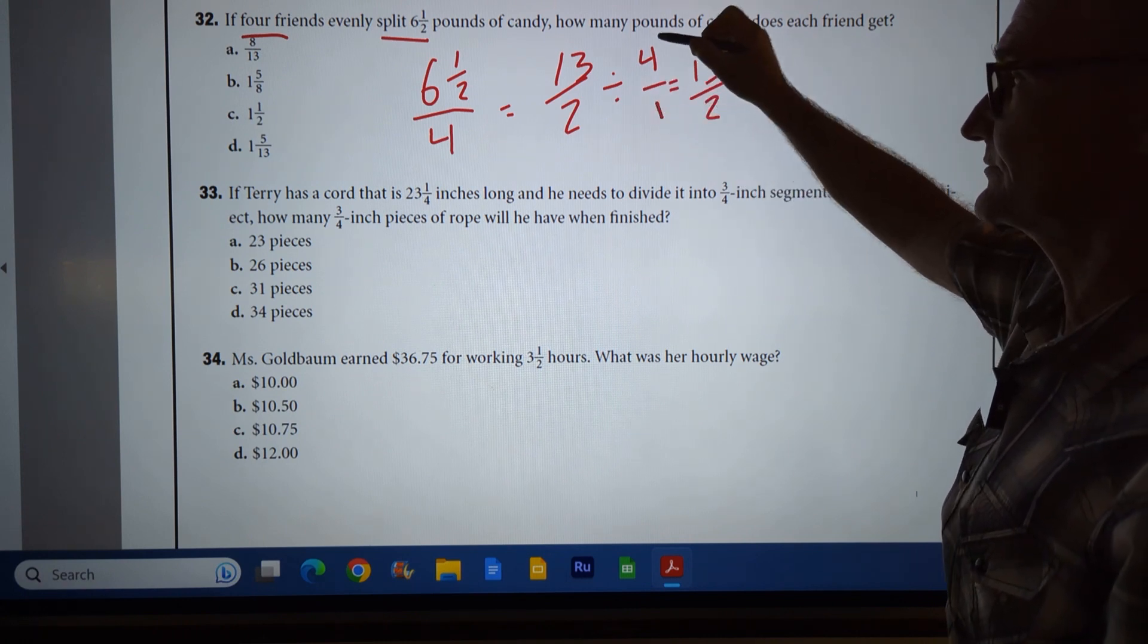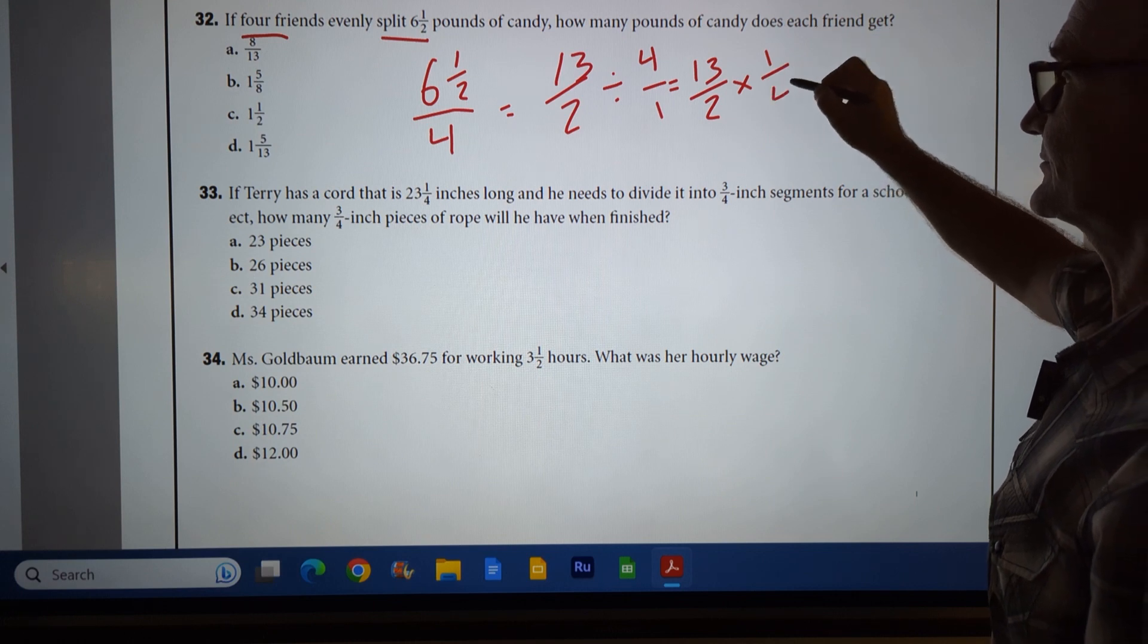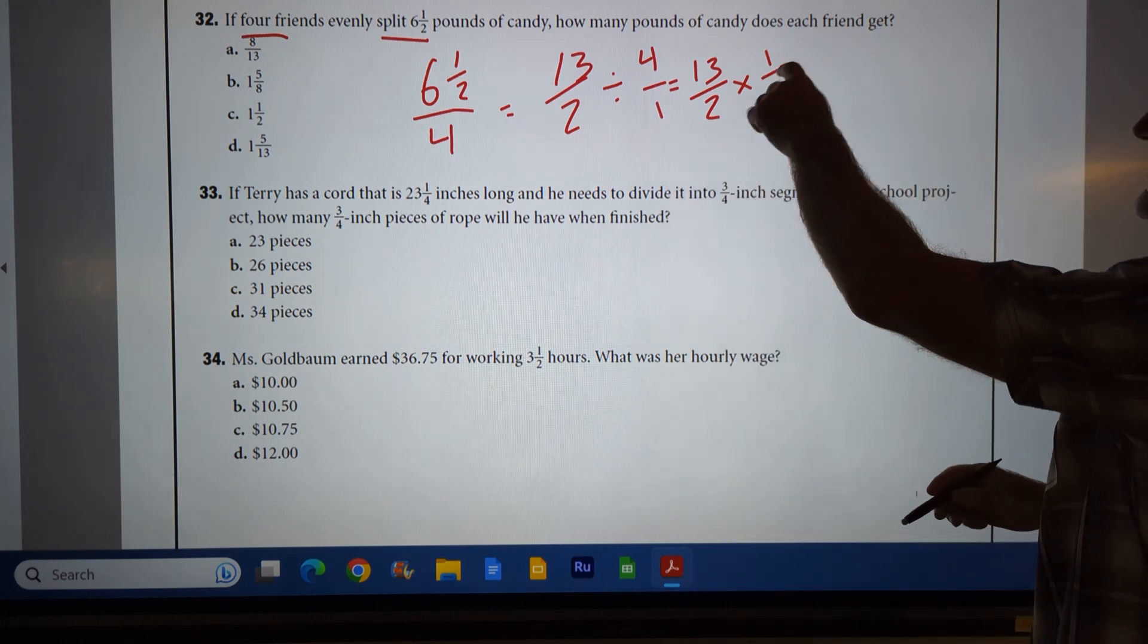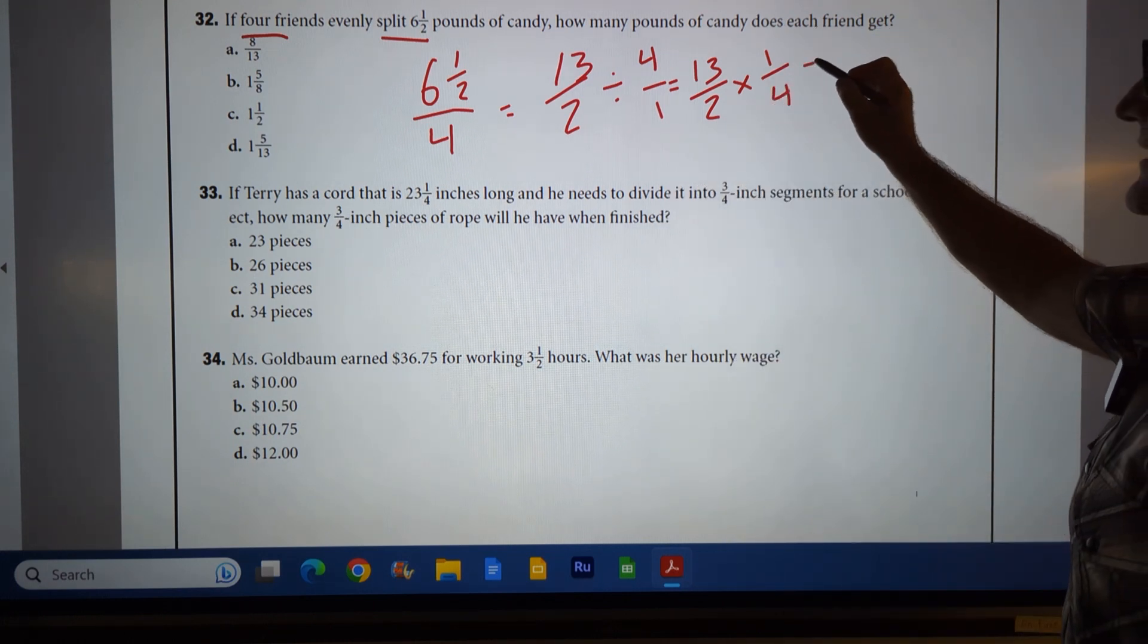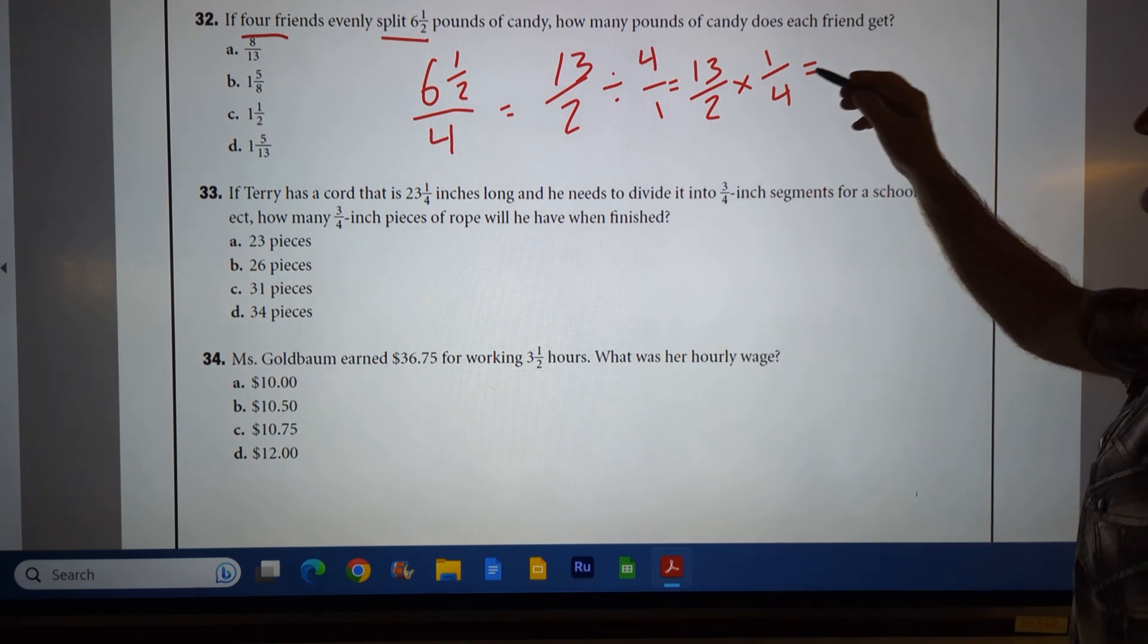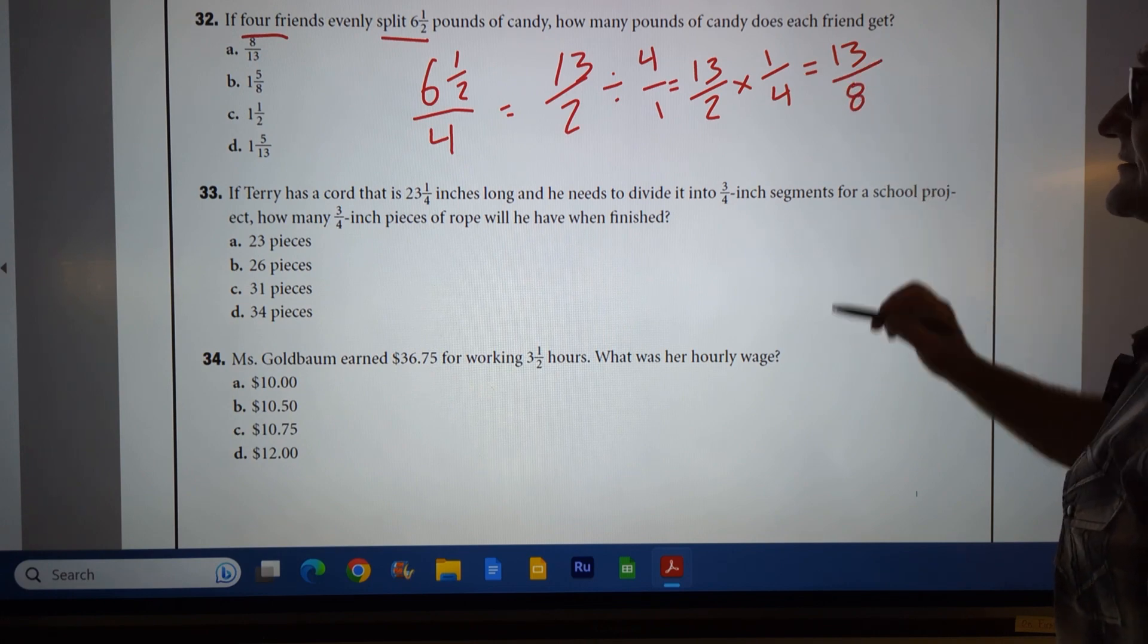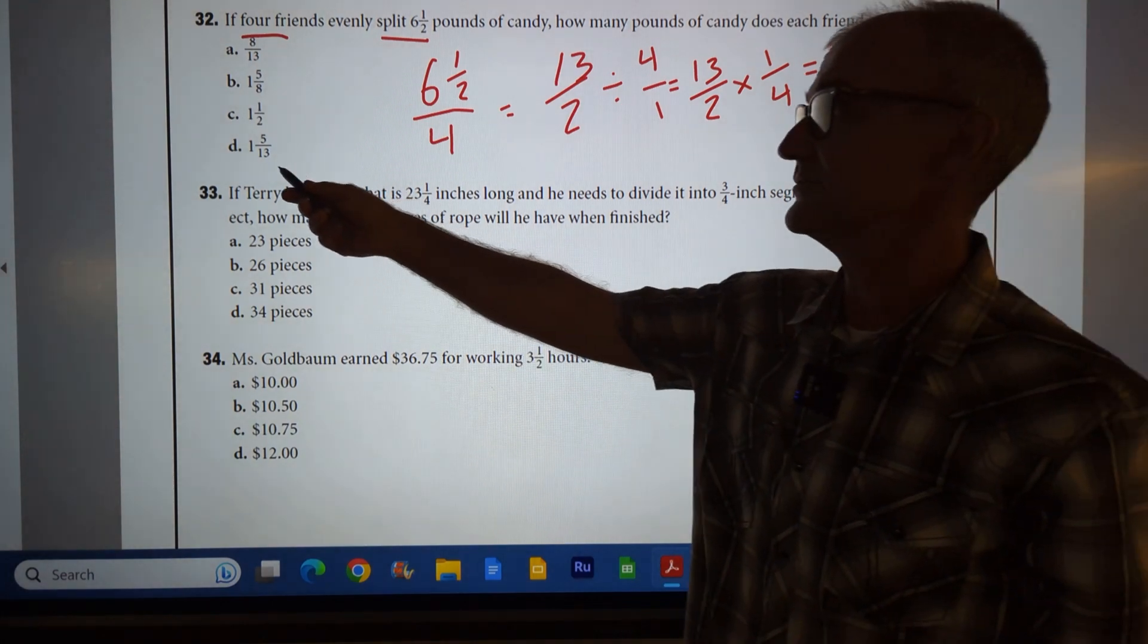I take that four, which is four over one, and I flip it over, and that gives me 13 halves times one-fourth. See if I can reduce anything. There's nothing there to reduce. 13 times one is 13. Two times four is eight. It gives me 13 eighths.